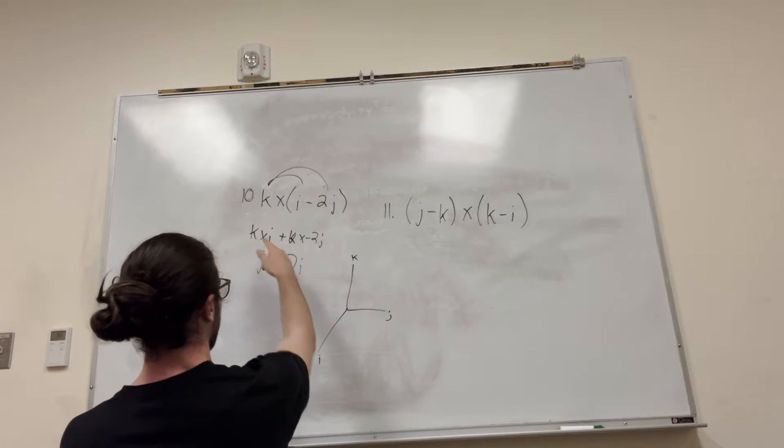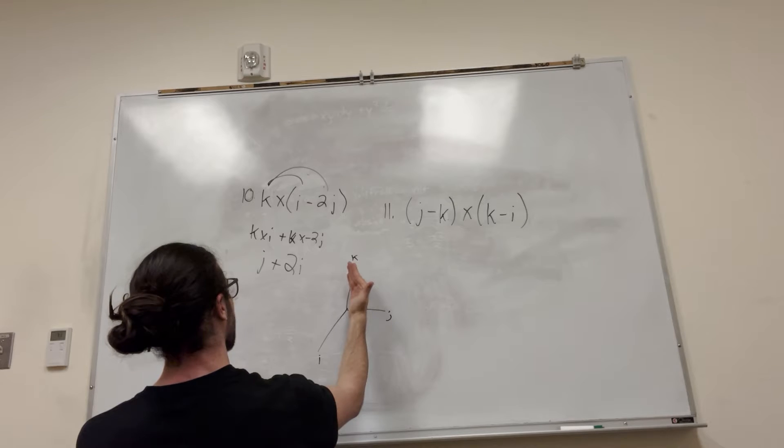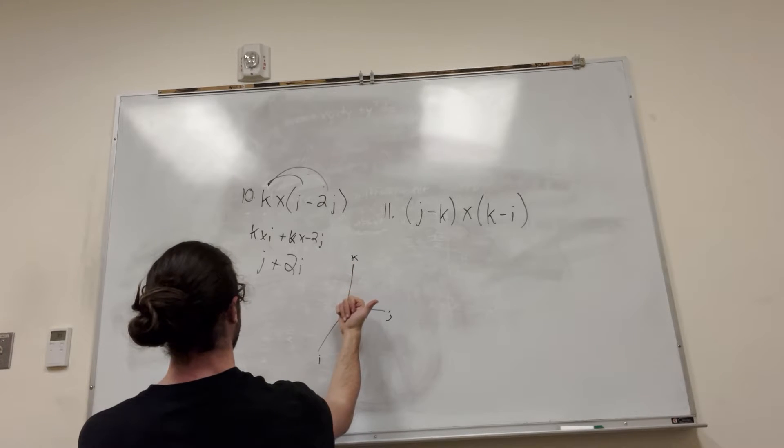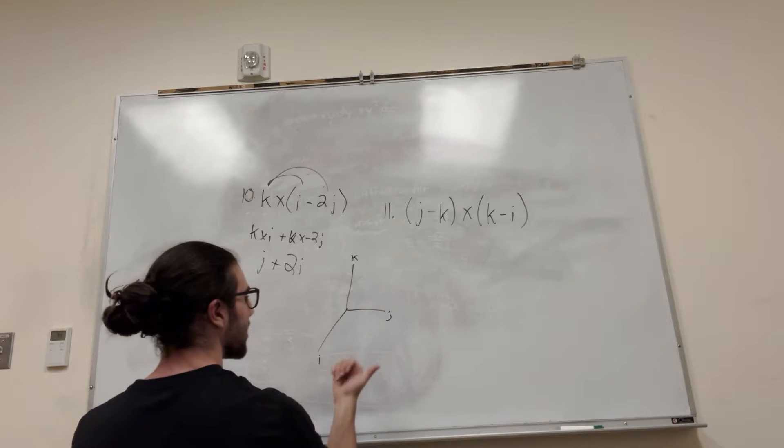So what I was doing, k cross i. I was putting my hands like this, pointing at k, bringing it down to i. And you notice the thumb is pointing in the direction of j.